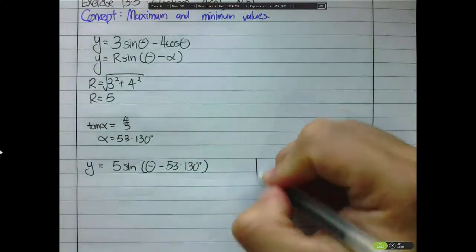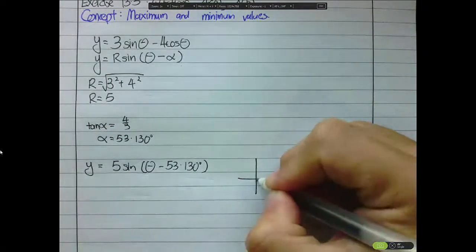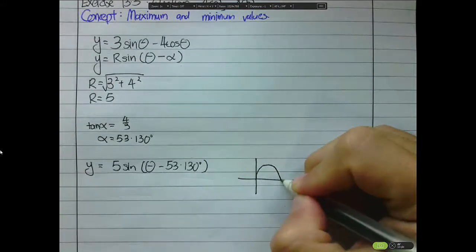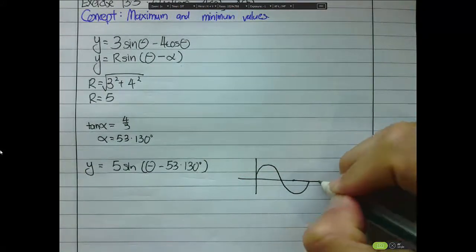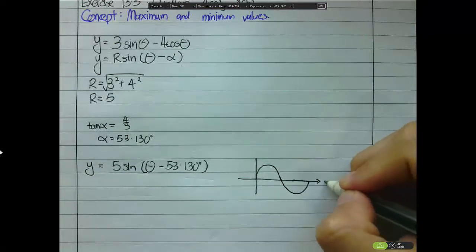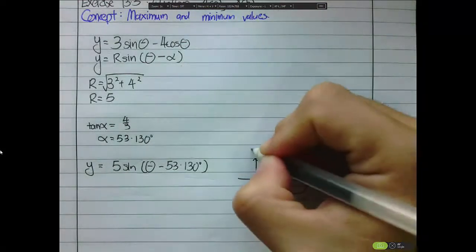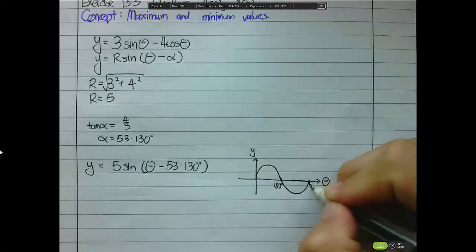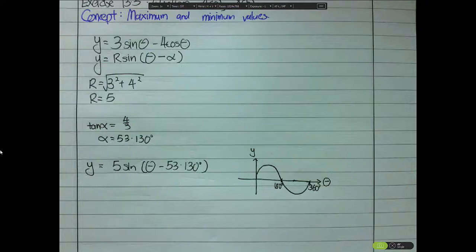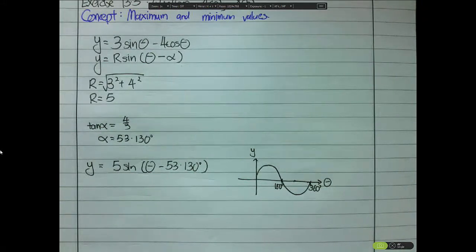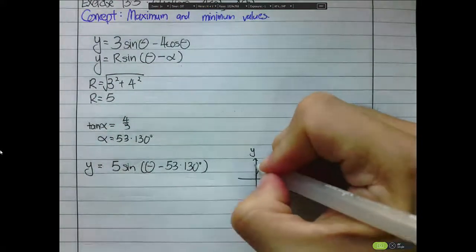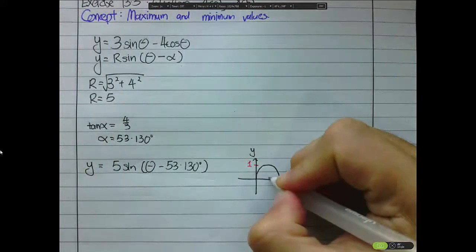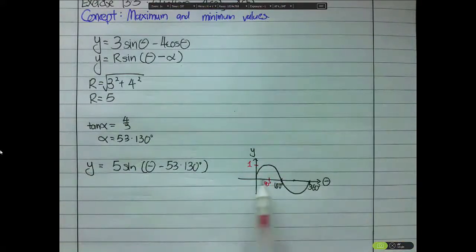For the sine curve, let's sketch it quickly. This is the sine graph, with θ on the horizontal axis and y on the vertical axis — labelled at 180° and 360°. From this diagram, the maximum value of the sine graph is 1, and it occurs at 90 degrees.